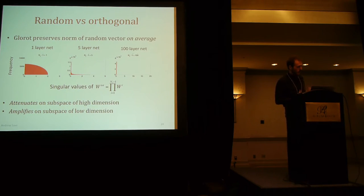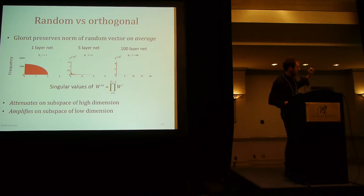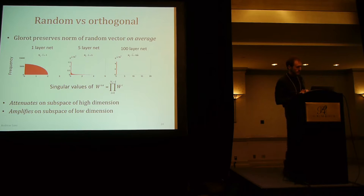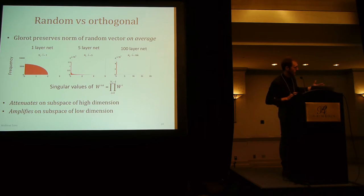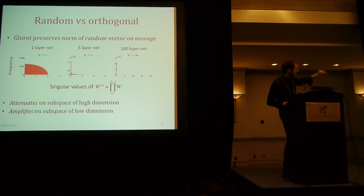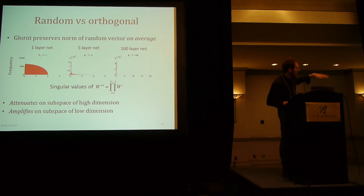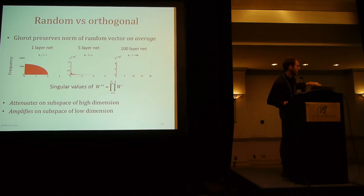Why is using a carefully scaled random matrix different from using a random orthogonal matrix? The intuition is that a carefully scaled random matrix preserves the norm of a random vector on average. But looking at the singular value distributions of the total weight matrix from input to output as depth increases, all the singular values are not at 1. Instead, you get a lot of singular values near 0 and a very small heavy tail of very large values — you're attenuating on a high-dimensional subspace and amplifying on a low-dimensional one. So you're throwing away information on many dimensions of your input, even though the norm is preserved on average.